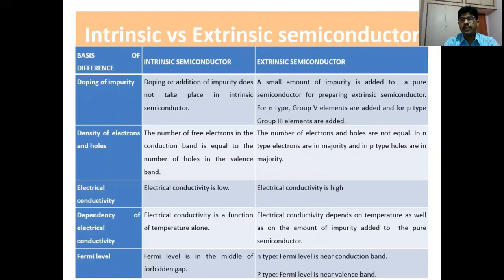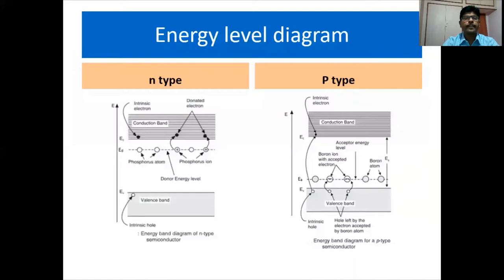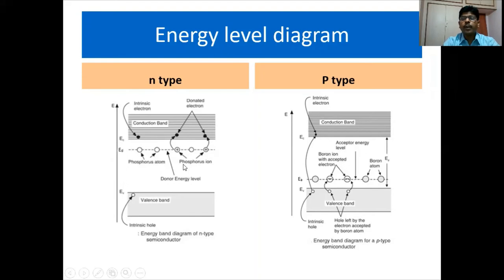These are the basic differences between an intrinsic semiconductor and an extrinsic semiconductor. This picture shows you the difference between N-type and P-type in terms of energy levels. In the diagram for N-type, there is an additional energy level ED known as donor energy level. To create an N-type material, we dope a pure semiconductor with pentavalent impurity, and this pentavalent impurity will donate an electron to the conduction band. That is why we have this donor energy level, which is close to the conduction band.